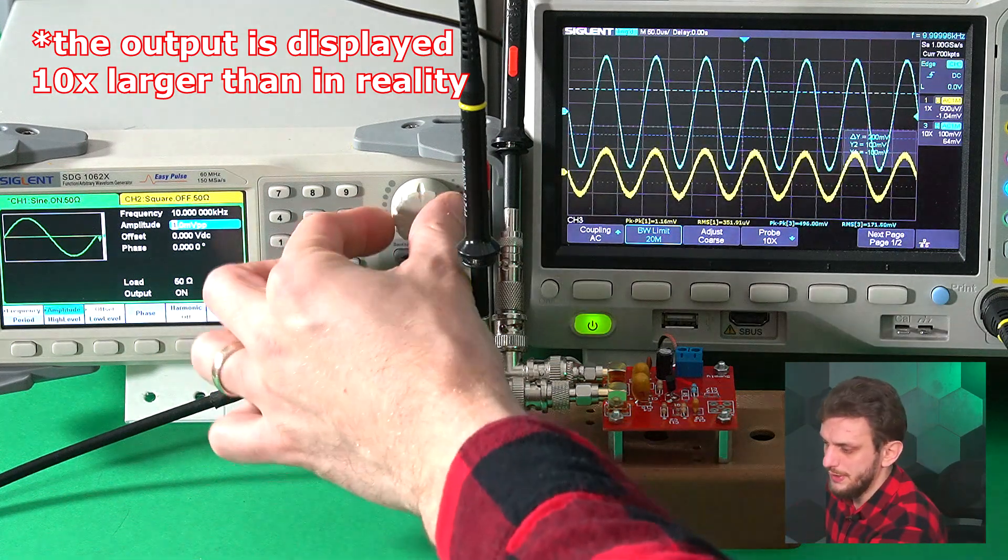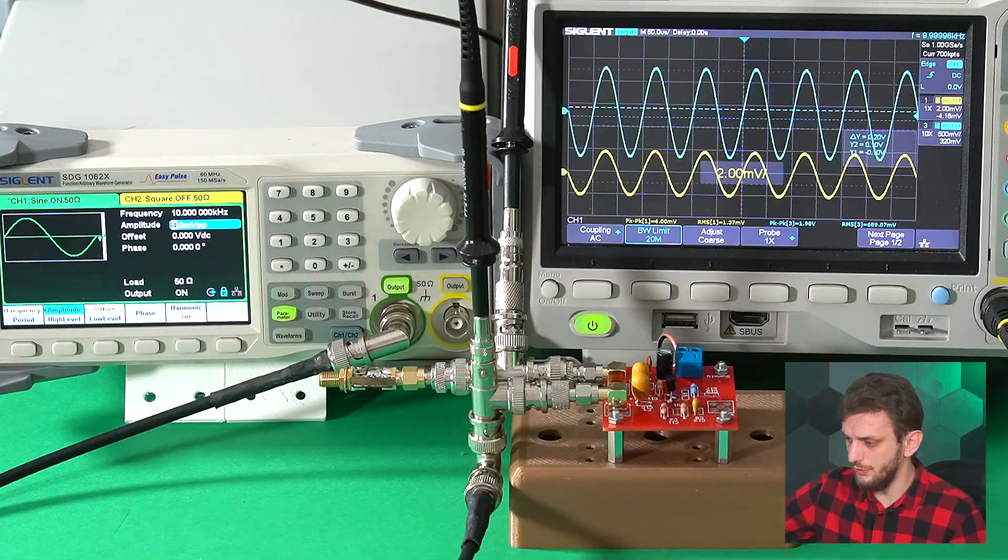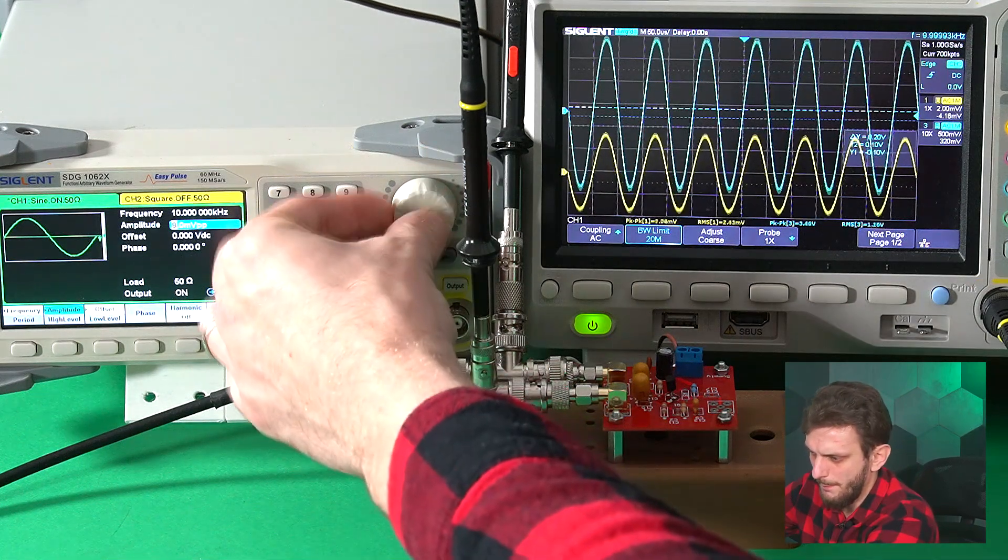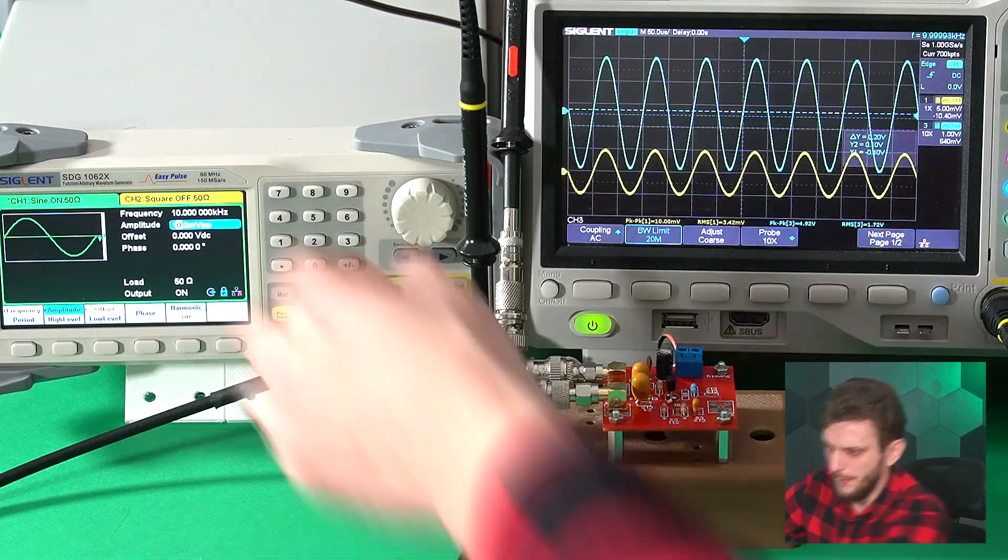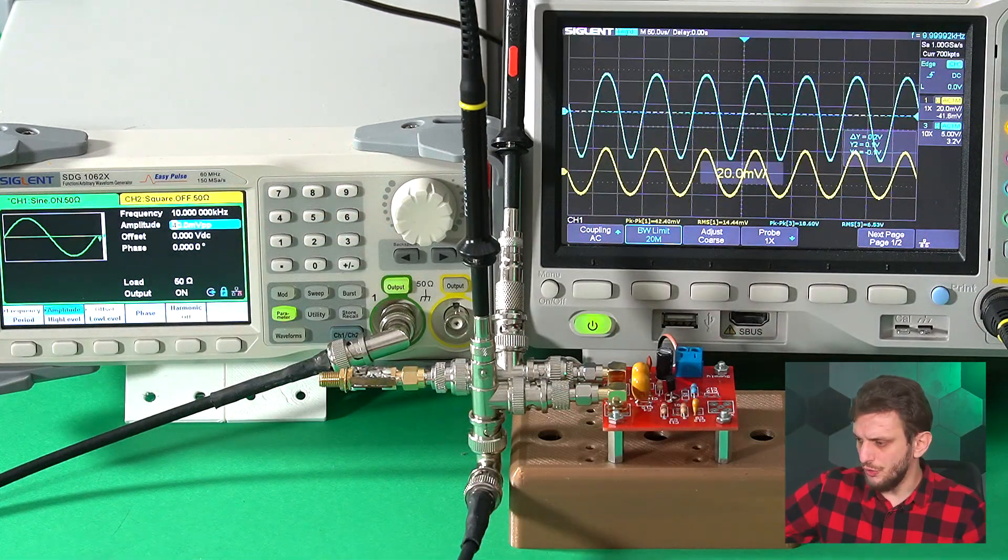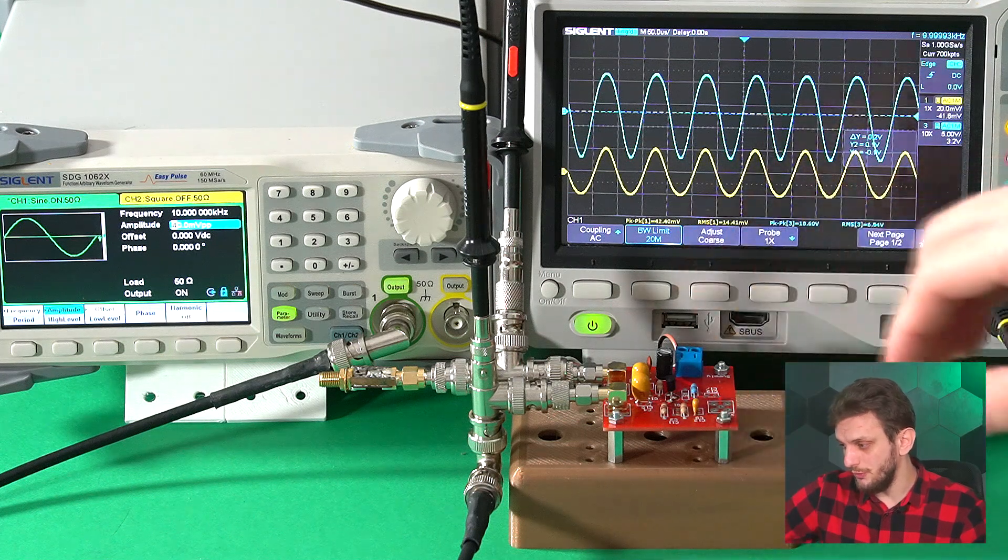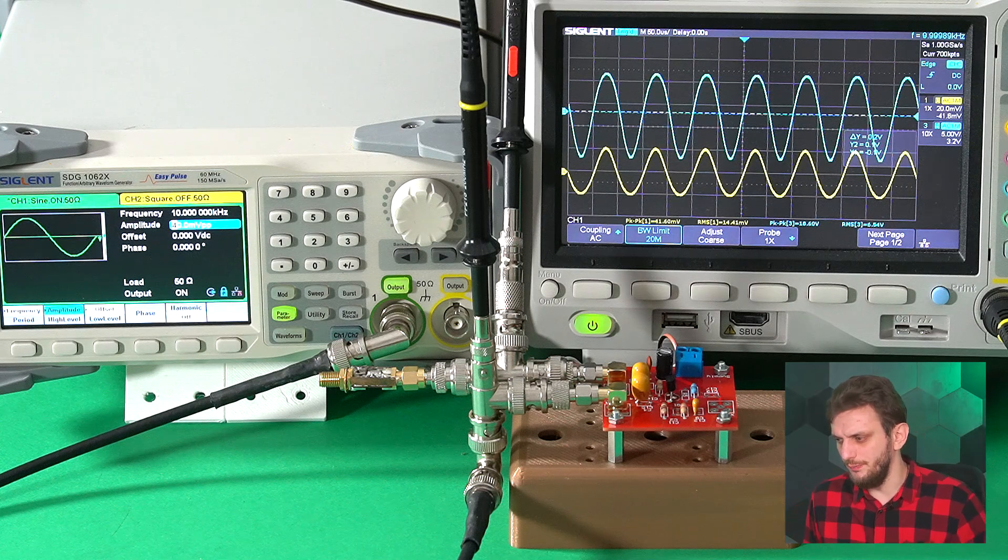If we start increasing our input signal, so 4 millivolts of input signal, 10 millivolts, everything still looks pretty good. At some point though, so right now we have a 42 millivolts input signal, the output starts to look a bit distorted.